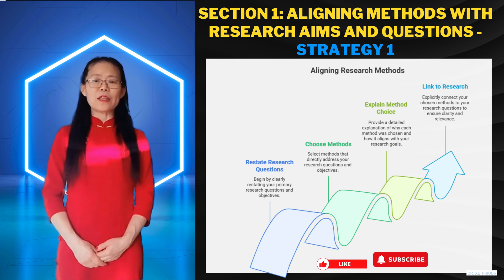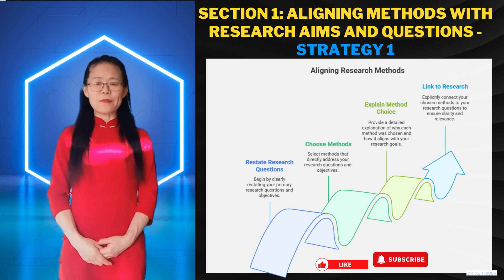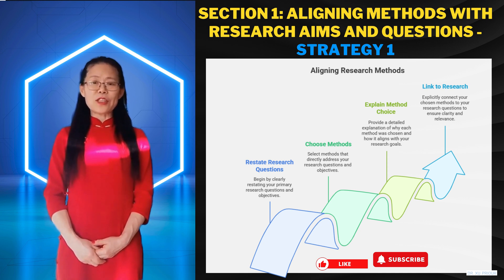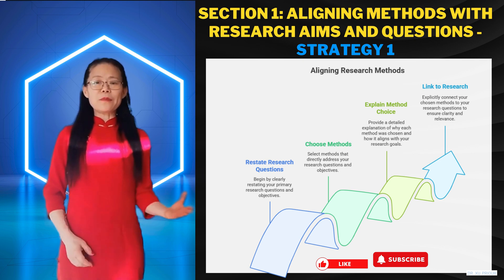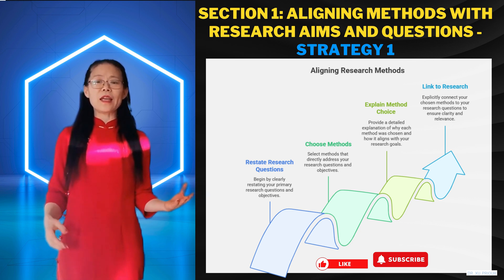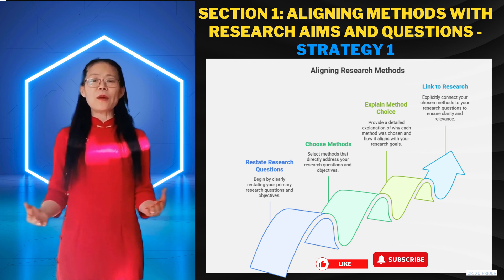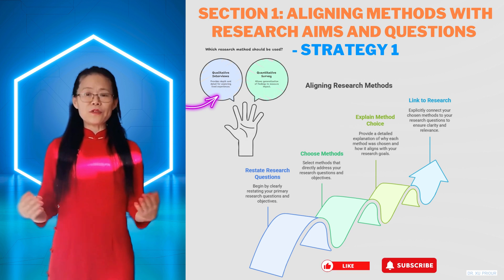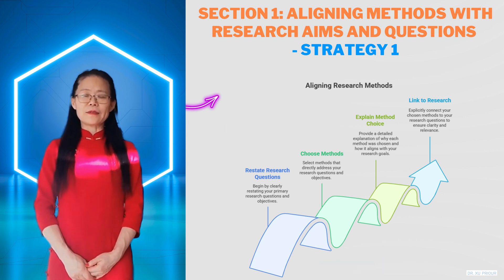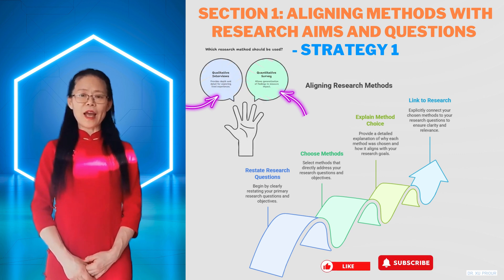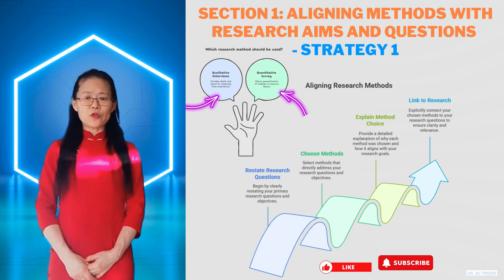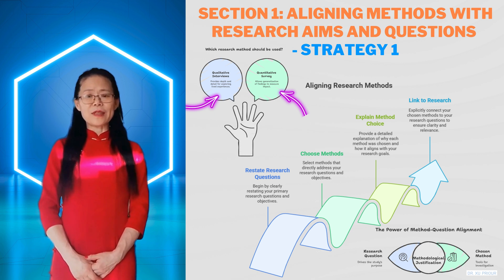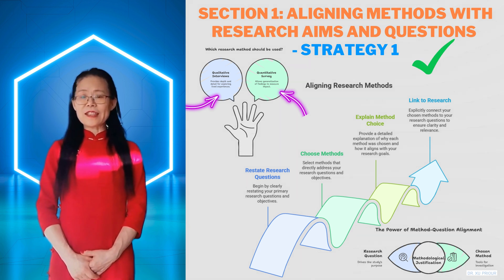Let's get started with the first strategy: align methods with research aims and questions. Start by restating your primary research questions and objectives. Then, for every method you choose, explain how it directly addresses those research questions and objectives. For example, to explore the lived experiences of X, qualitative interviews were chosen for their depth and detail. On the other hand, to measure the impact of Y, a quantitative survey was used to generalize findings. Always make the link between your question and your chosen method explicit.